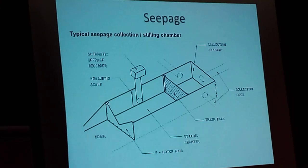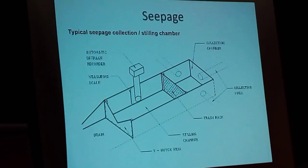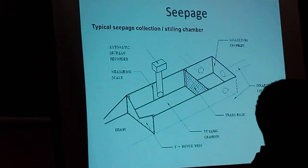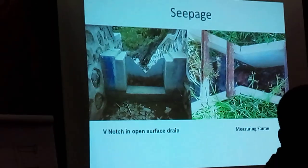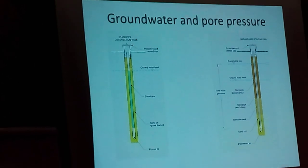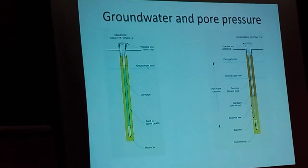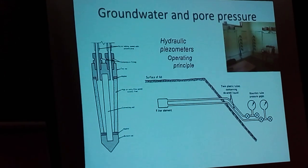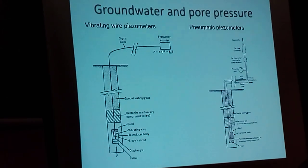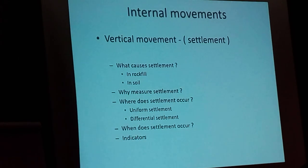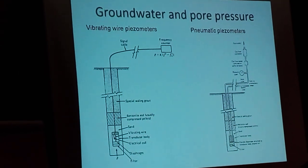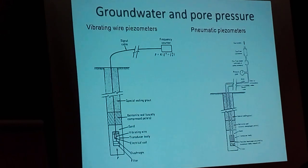For seepage, this shows a typical arrangement for seepage collection — a seepage weir. That's how it looks. For groundwater and pore pressure monitoring, we use piezometers, which could be standpipe piezometers, Casagrande piezometers, hydraulic piezometers, vibrating wire piezometers, or pneumatic piezometers. These are the instruments used for groundwater and pore pressure monitoring.